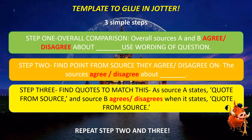The template for your jotter — three simple steps. Step 1, overall comparison: 'Overall, sources A and B agree or disagree about...' and use the wording of the question. Step 2: find points from the source — 'The sources agree or disagree about...' with a full stop once you've stated the point. Step 3: find quotes to match — 'As source A states...' with a quote, and 'source B agrees or disagrees when it states...' with another quote. Then repeat steps 2 and 3. That is how you answer a source comparison question.